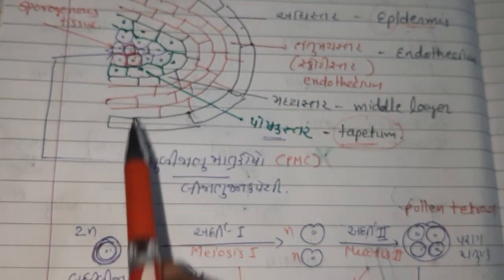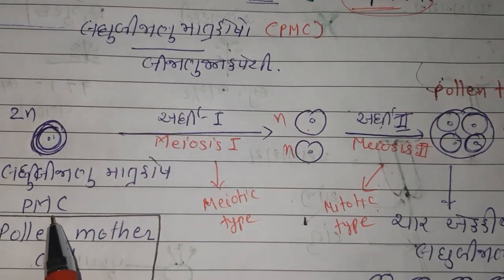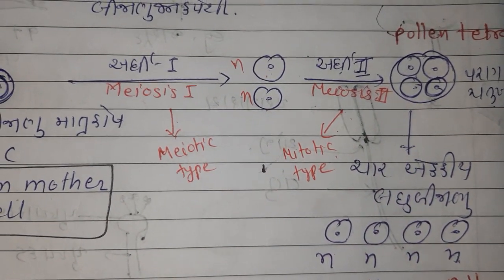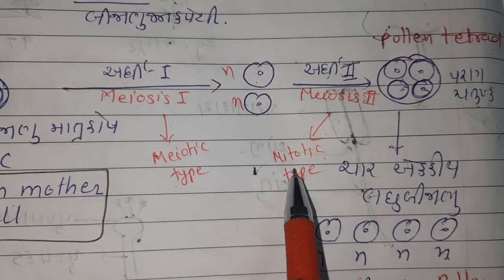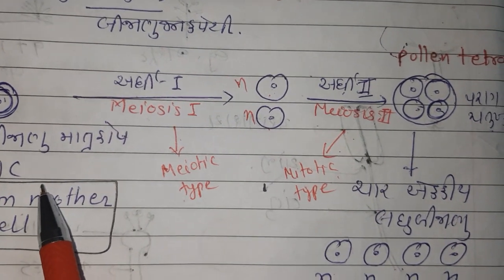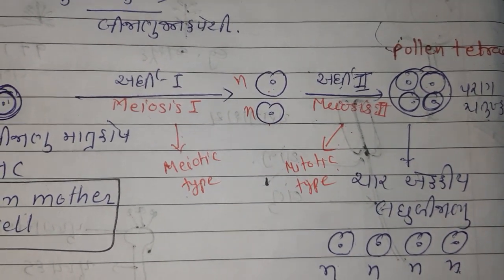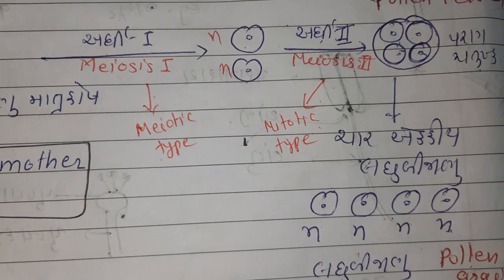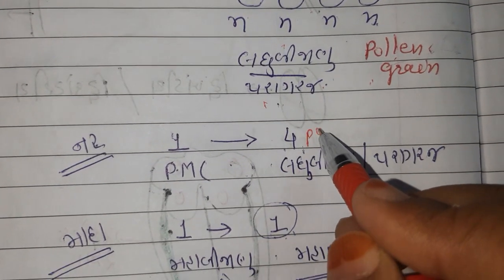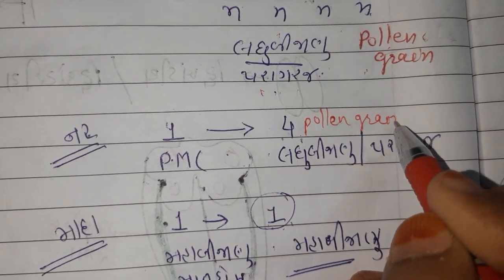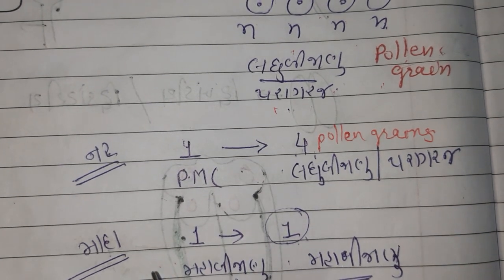And at maturity, that pollen tetrad releases four pollen grains and all are haploid. So this sporogenous tissue, each cell is called pollen mother cell, and this pollen mother cell undergoes meiosis and four pollen grains are produced. Remember, pollen mother cell undergoes meiotic division and forms four pollen grains, and all are haploid. This is important for sums. From one pollen mother cell we are having four pollen grains.